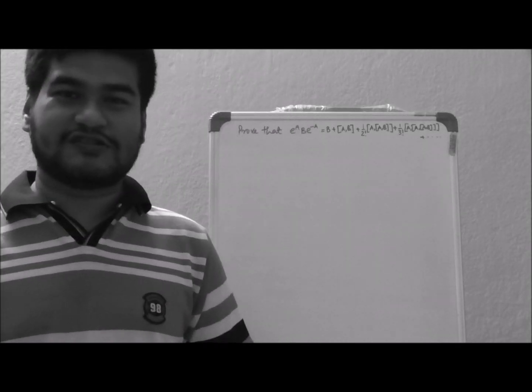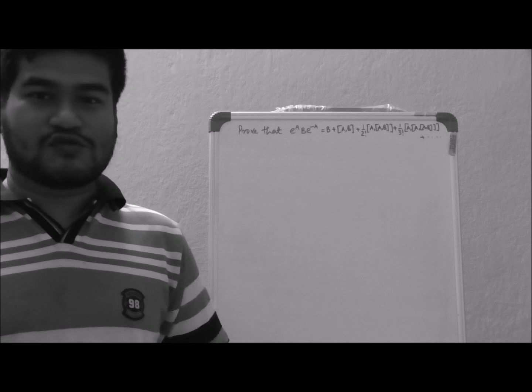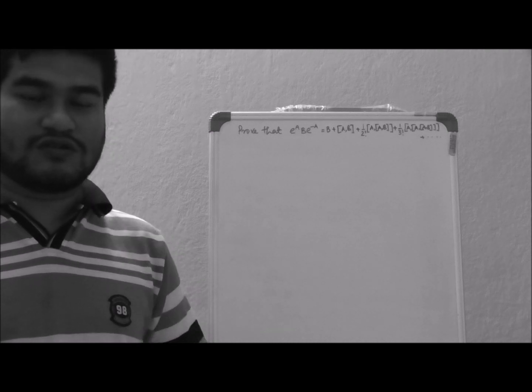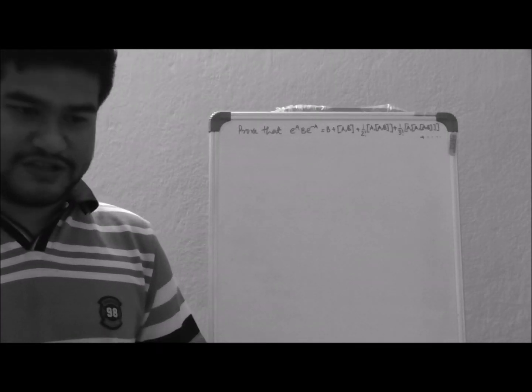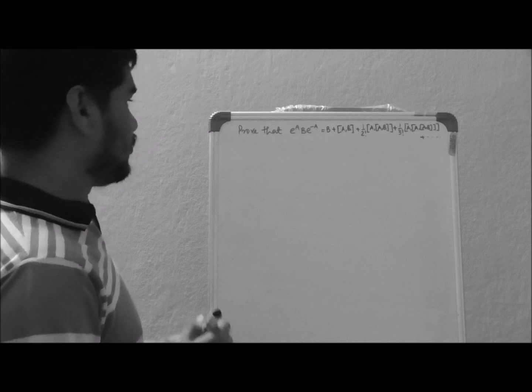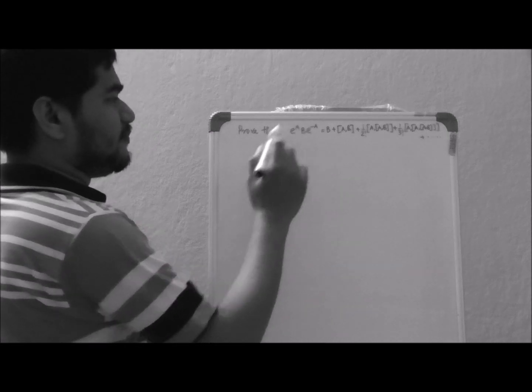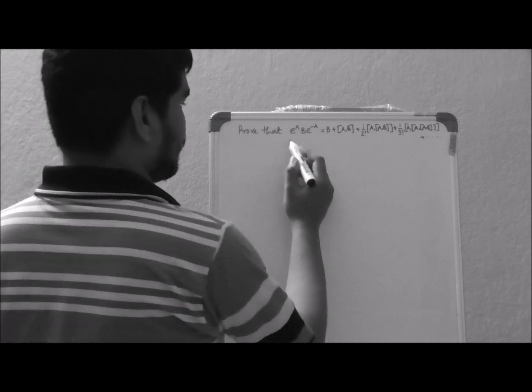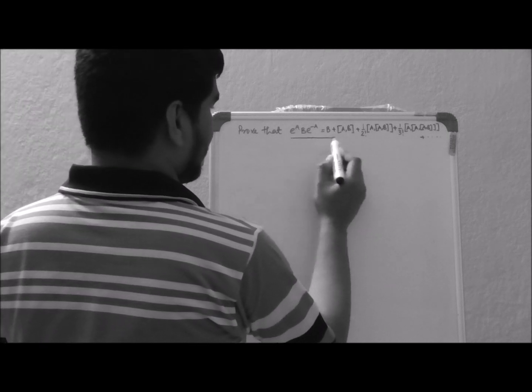Hello and welcome. Today I shall try to prove one famous quantum mechanical identity, which you might have already encountered in operator formalism in quantum mechanics. So let's see what the problem is for today. For A and B, two quantum mechanical operators, we have to prove this identity.